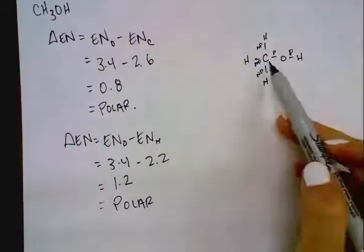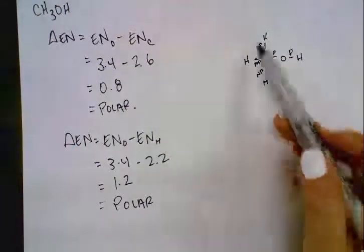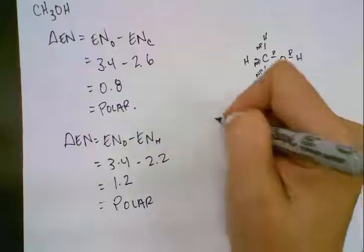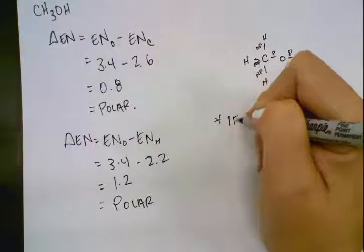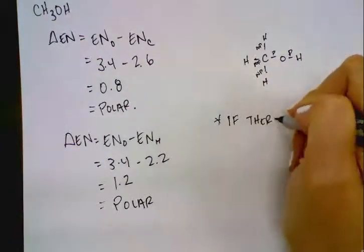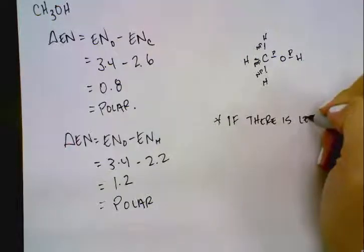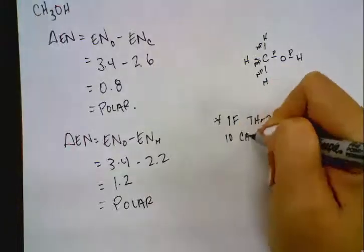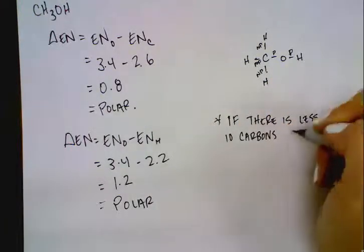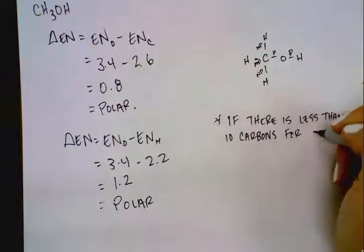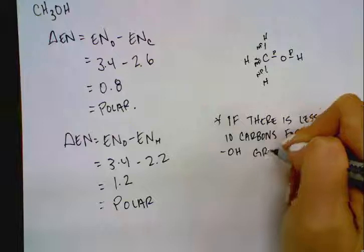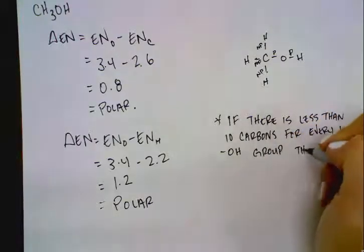So the problem is here we have a polar section and a nonpolar section, so it's trickier to predict if it's going to be in the polar layer or the nonpolar layer. So what we do here is we use the rule that we learned, that if there is less than 10 carbons for every 1 hydroxide group, so 1 OH group...